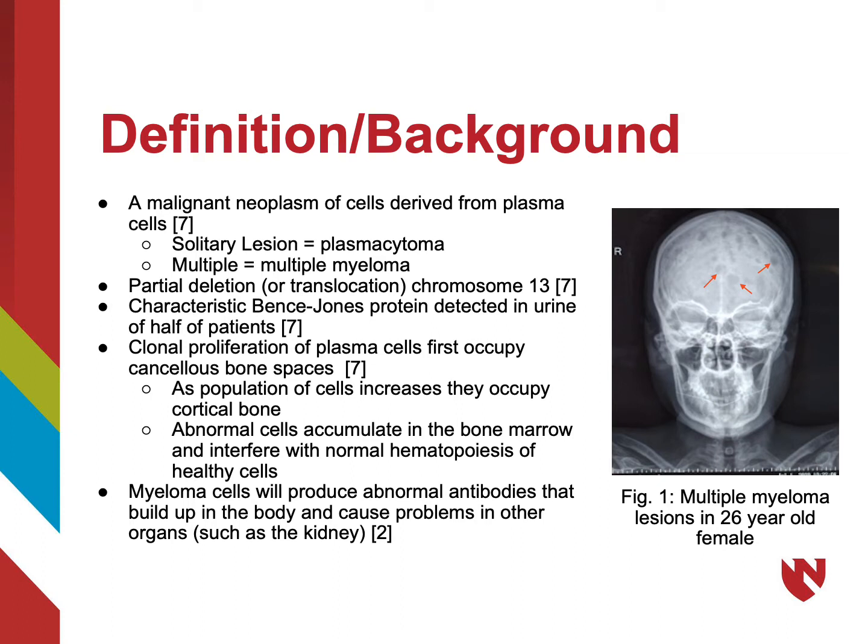These multiple myeloma cells will produce abnormal antibodies that can build up in the body and cause problems with other organs, such as acute or more often chronic renal failure in the kidney. In figure 1, you can see a radiograph of a 26-year-old female presenting with multiple myeloma lesions of the skull.